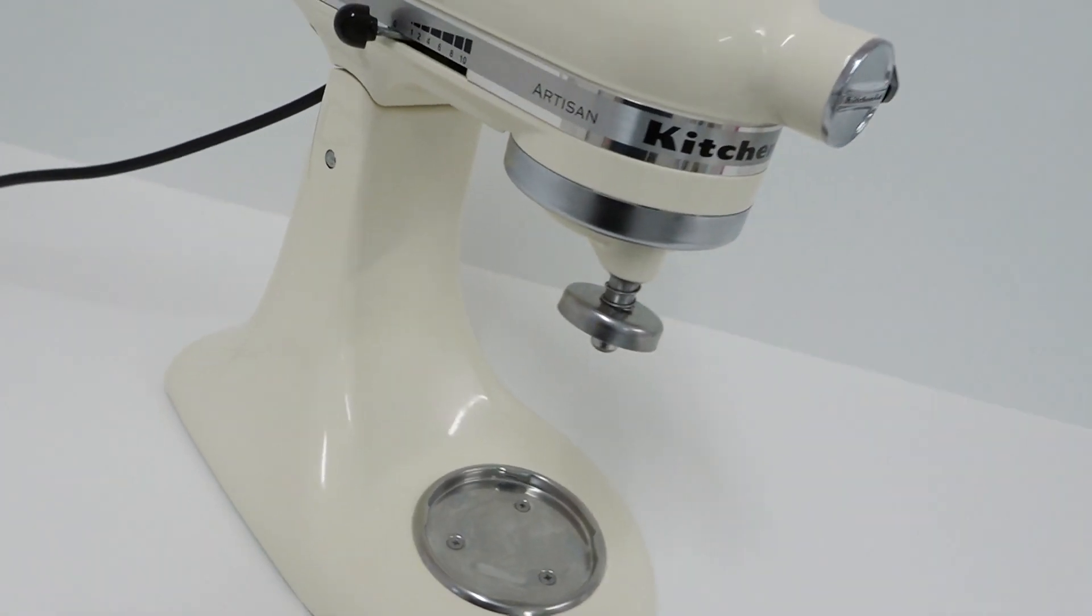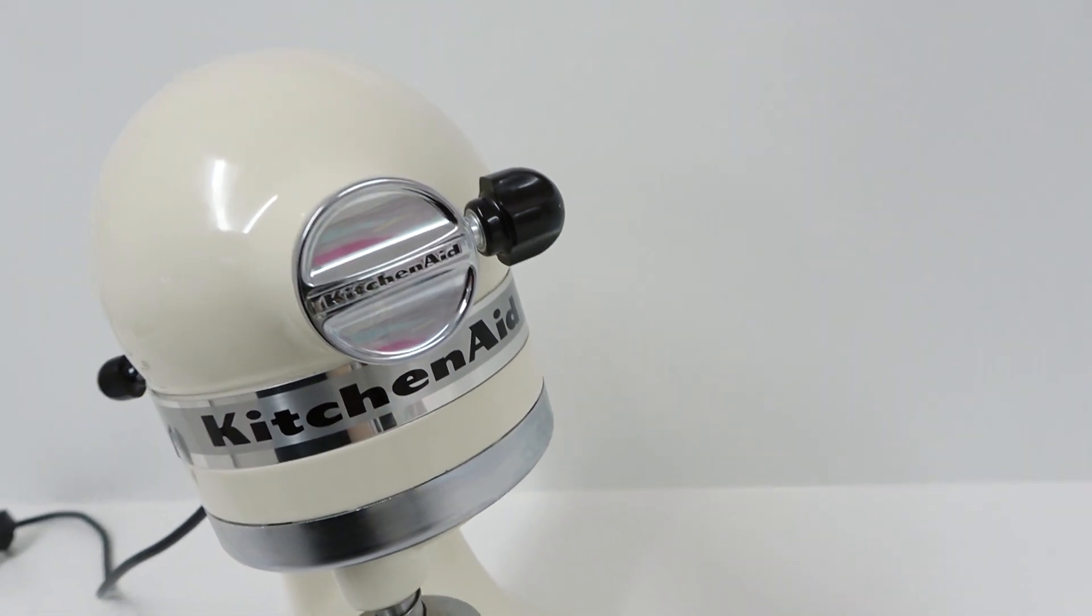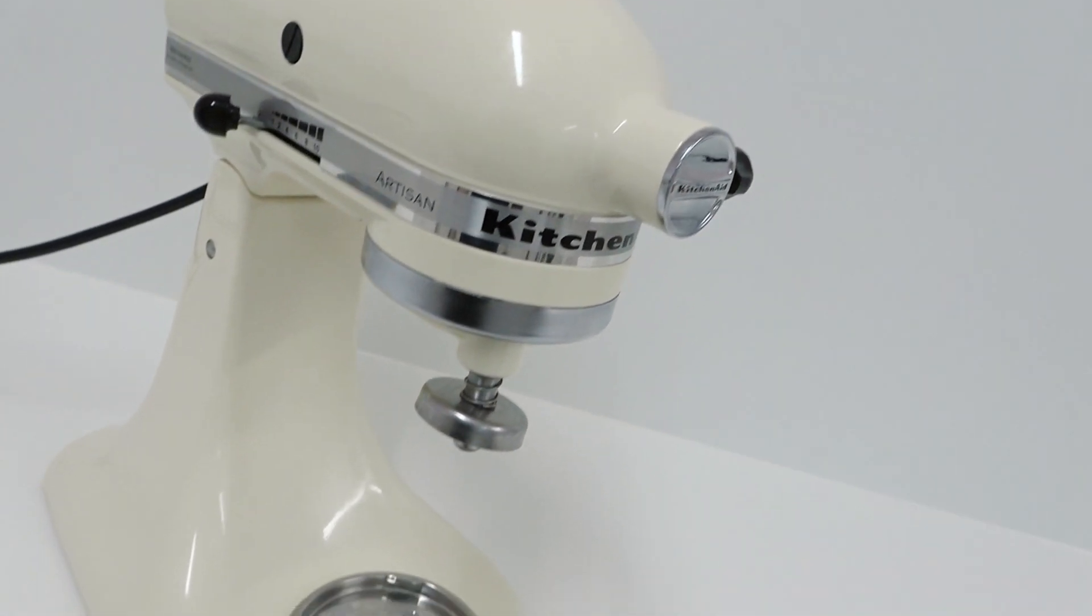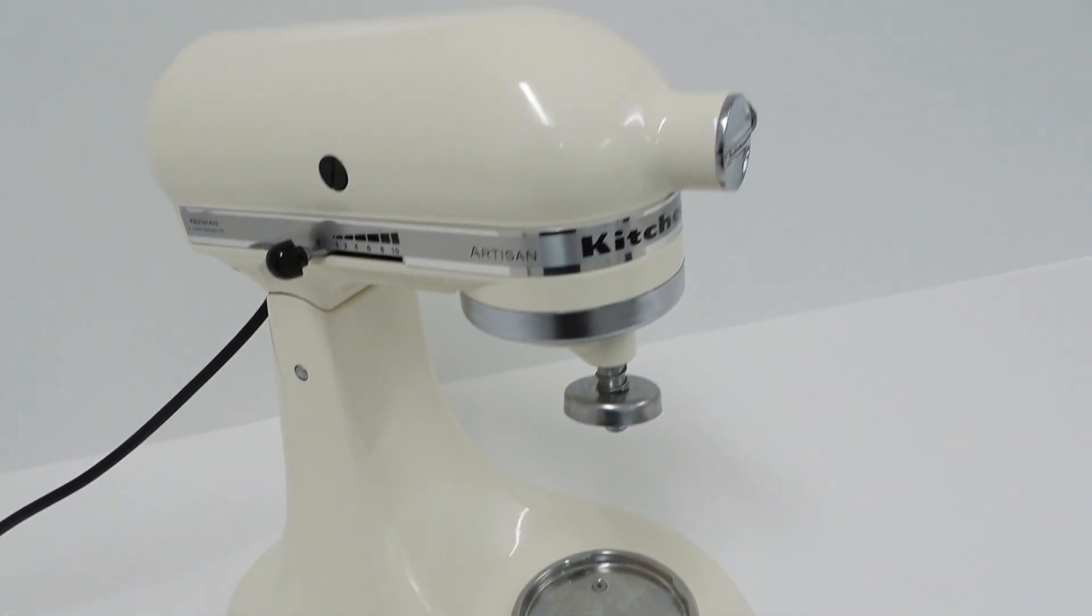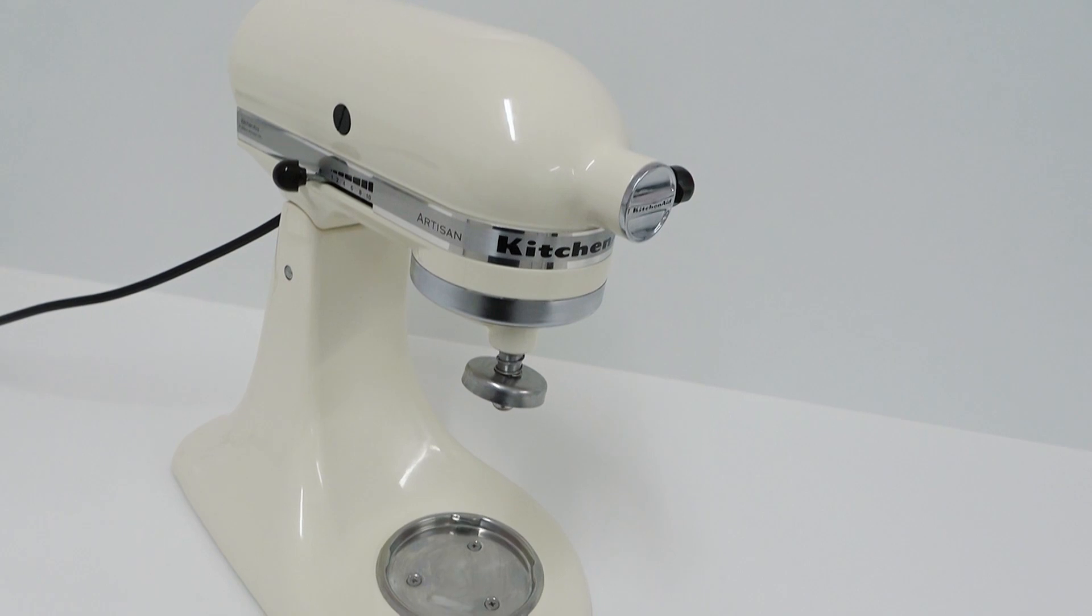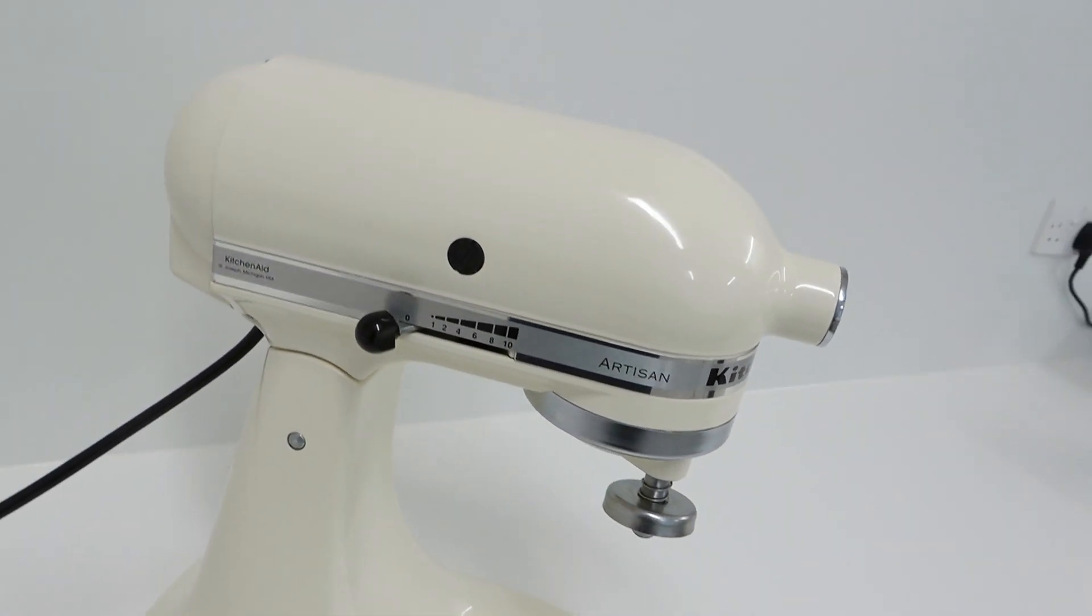But now you can stand back and admire your deep-cleaned KitchenAid, knowing none of that nasty cocoa gunk is sitting under your plate or behind that band. Hope you found this tutorial useful and that you found it super satisfying to clean. Let me know how much dirt you found in your KitchenAid in the comments below. Thanks guys, see you next week.